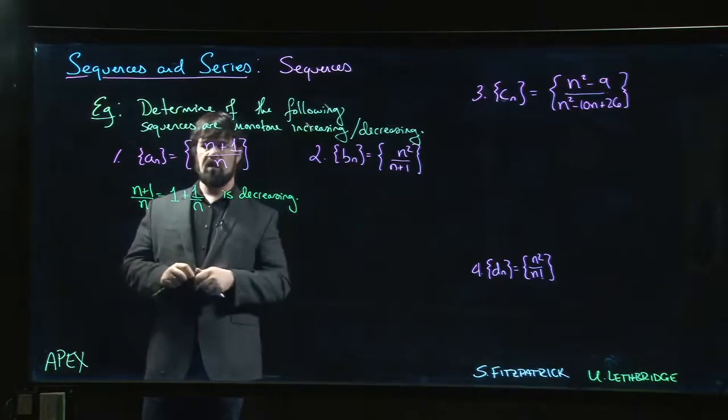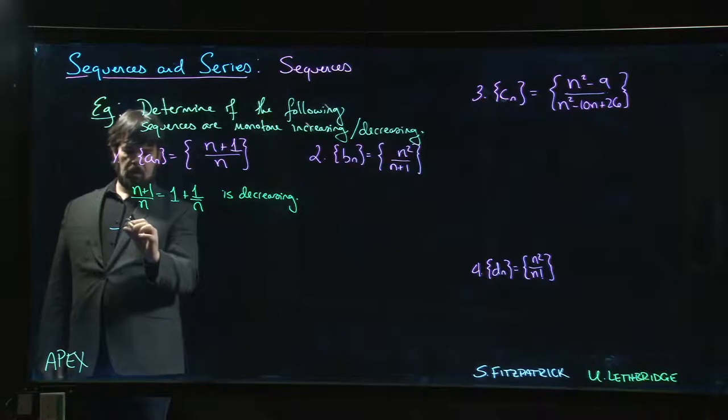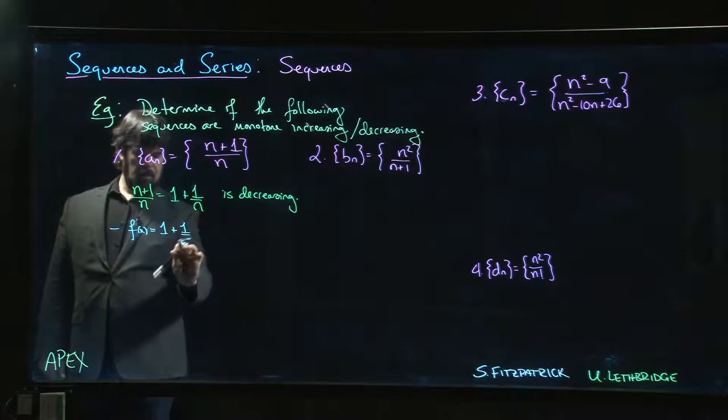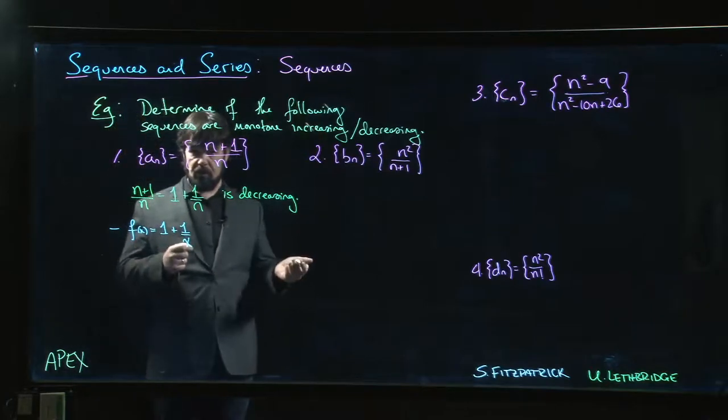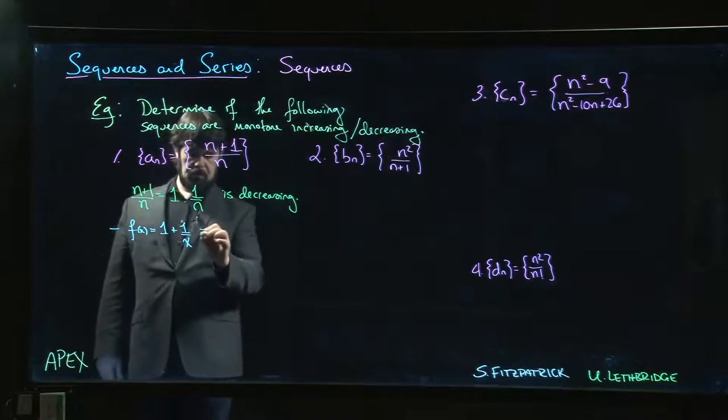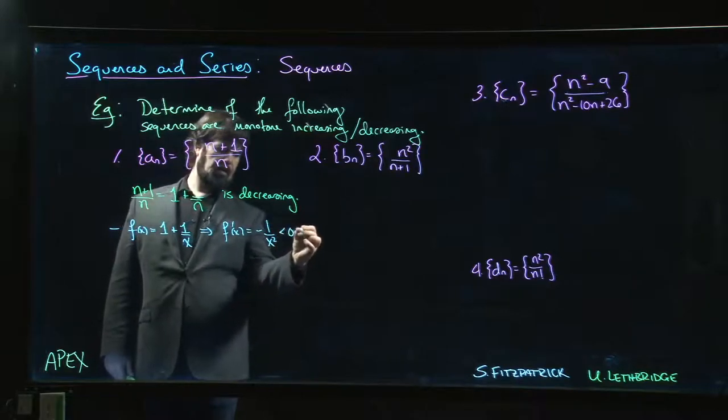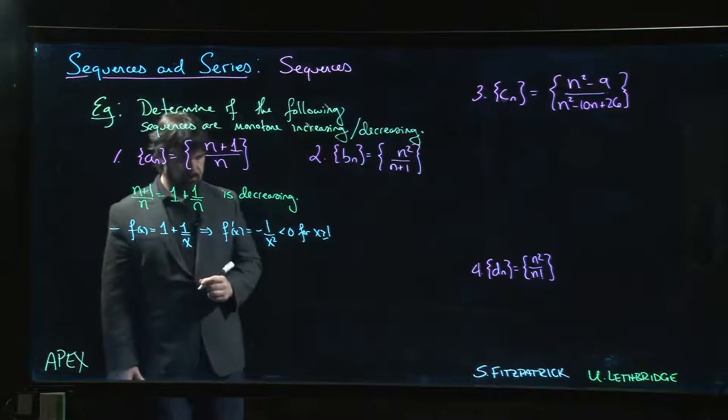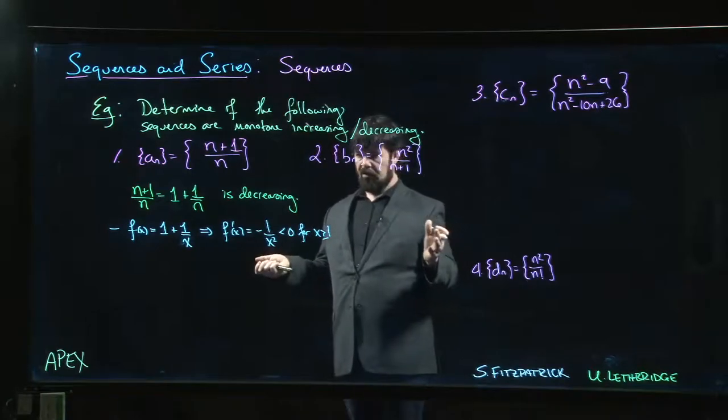Now there's a couple of ways that you could actually establish this. So one way you could establish this is we could say, if I let f of x equal 1 plus 1 over x, our sequence is just the values of f of x when we restrict the domain to the natural numbers. But we know that the derivative of this thing is minus 1 over x squared, which is less than 0 if x is bigger than or equal to 1. And so that certainly establishes that this is a decreasing sequence.